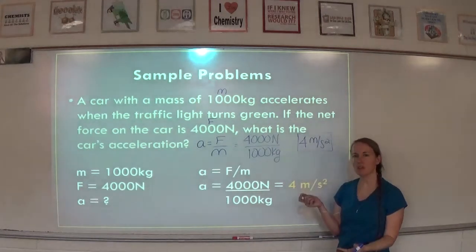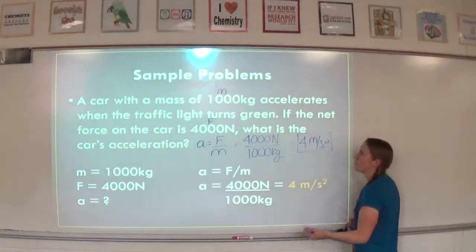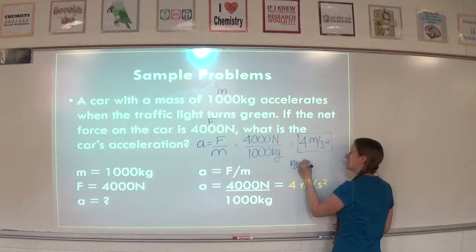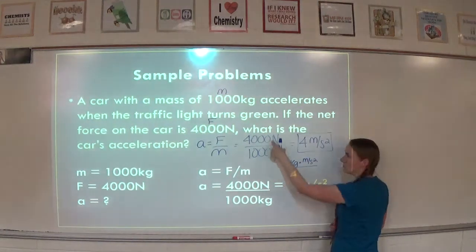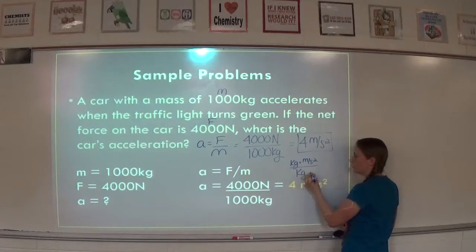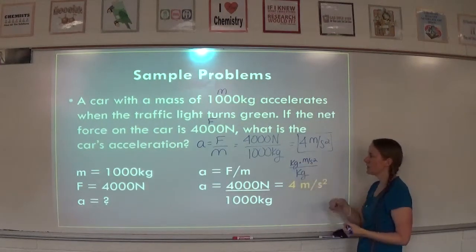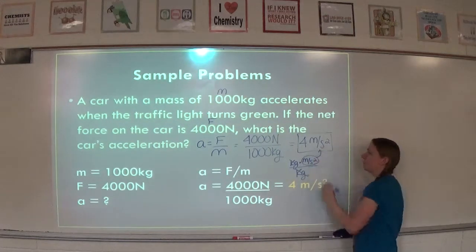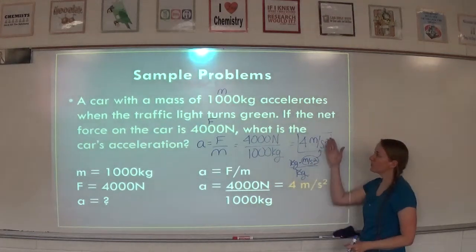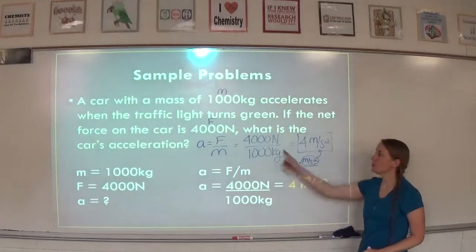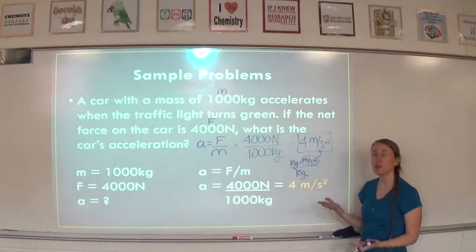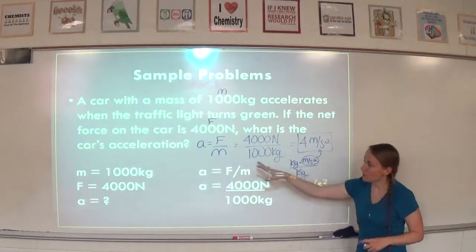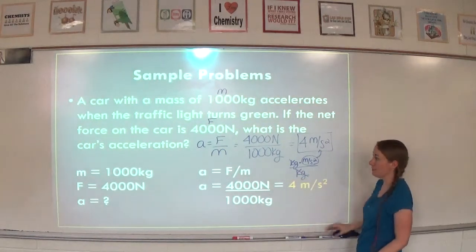If you couldn't figure out the units for acceleration, remember: a Newton is a kilogram times meter per second squared, and we're dividing by a kilogram. If kilograms is on top and on bottom, it cancels out, and you're just left with meters per second squared. So if you forget the units for acceleration, you can always cancel your units — you just need to remember a Newton is a kilogram times meters per second squared.